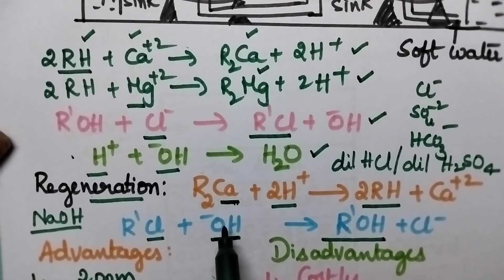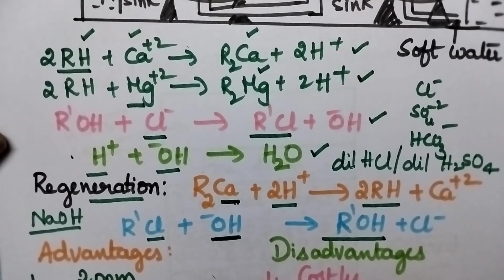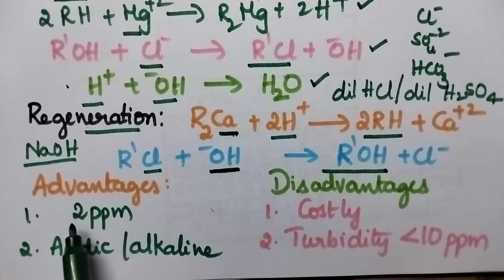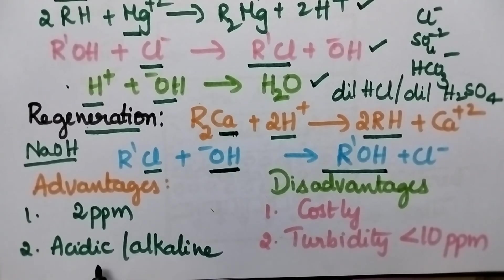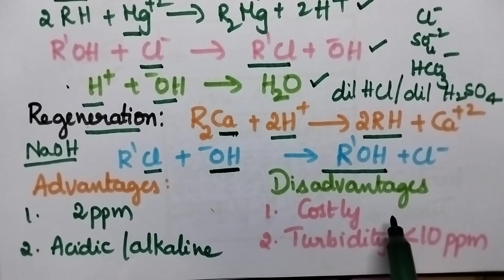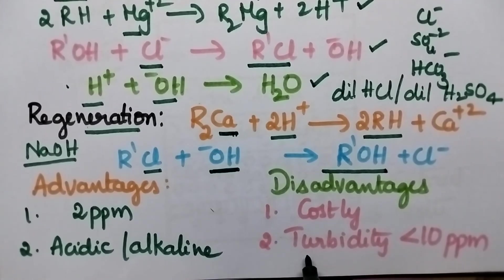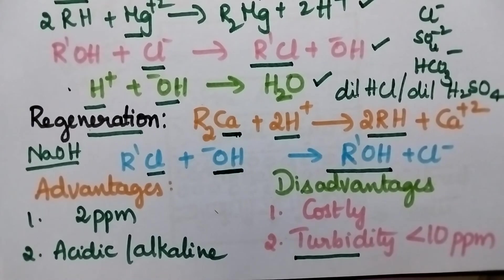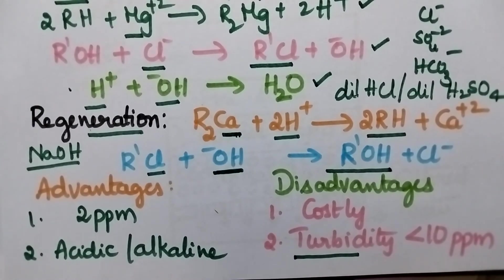Coming to the advantages of the ion exchange process: the hardness can be removed up to 2 ppm, and it is suitable for the treatment of both acidic and alkaline water. Coming to the disadvantages: this technique is costly, and it is not suitable for water having turbidity greater than 10 ppm — that means turbidity should be less than 10 ppm.